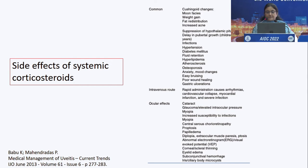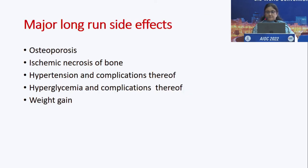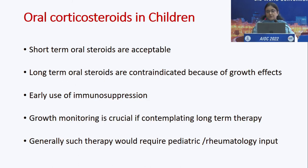Systemic side effects of corticosteroids which must be kept in mind include osteoporosis, ischemic necrosis of the femur, hypertension, hyperglycemia, and weight gain. Oral corticosteroids are contraindicated in children for long-term use — we very quickly shift them to immunosuppressants, which are far safer in children as they are not going to hamper growth.